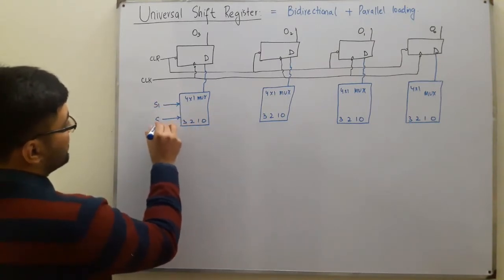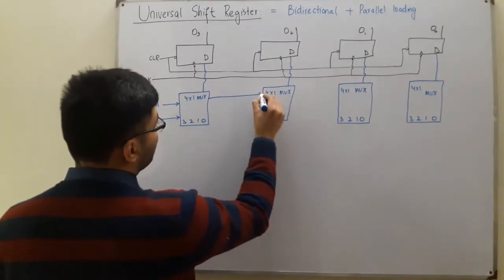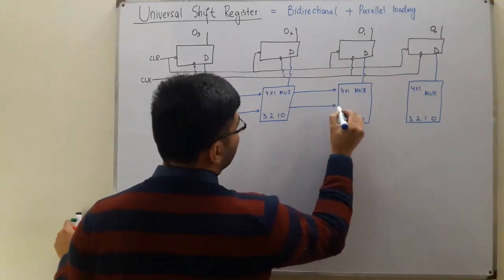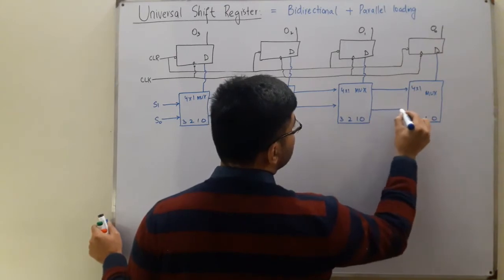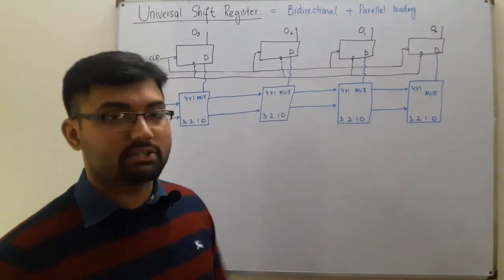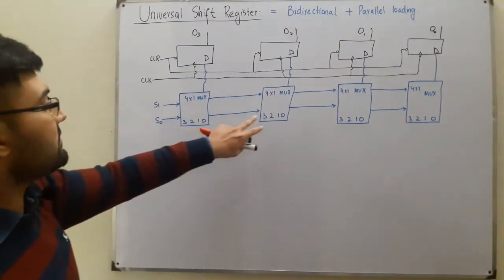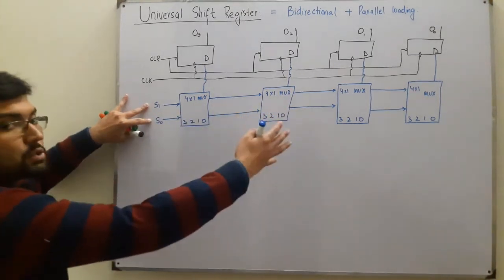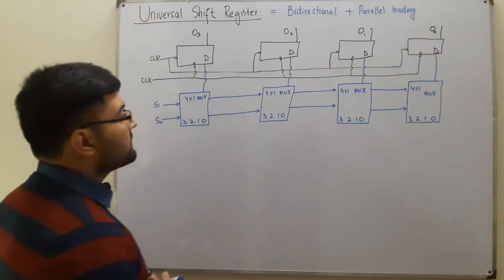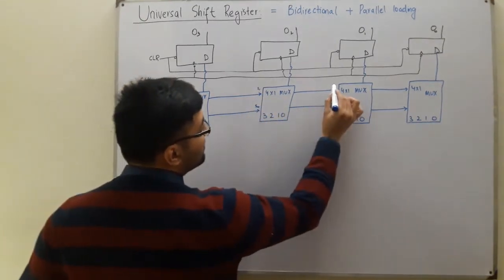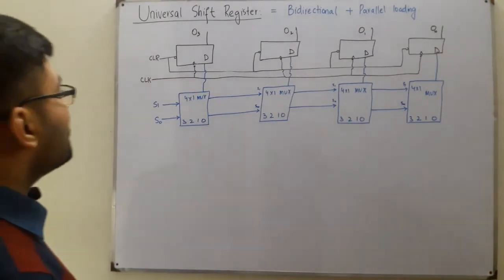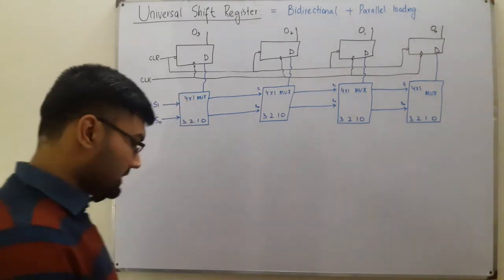The select lines are S1 and S0. For all four flip-flops, we have these two select lines. I'm showing them running in this way to indicate they are connected to all four multiplexers — this does not mean anything is fed from one multiplexer to another as a select. The same S1 and S0 are connected to all four multiplexers.